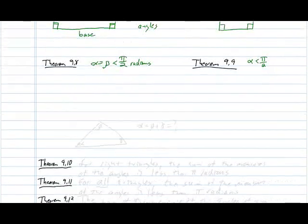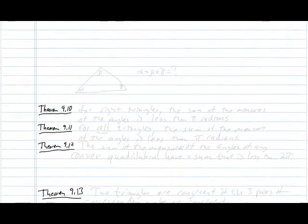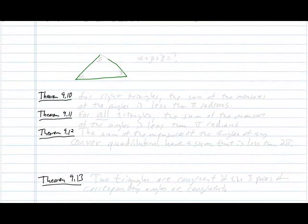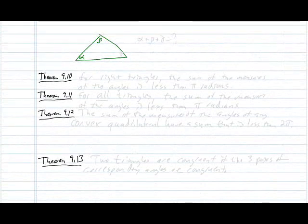Now, theorem 9.10 talks about the measures of triangles. So, of course, we have triangles in our geometry. We've been talking about them. We've talked about omega triangles as well. And in Euclidean geometry, of course, the sum of these three angles is 180 degrees, or π radians.